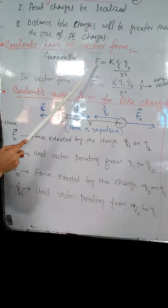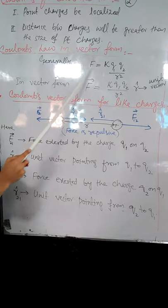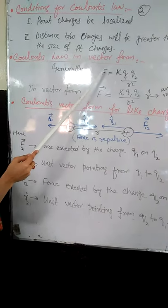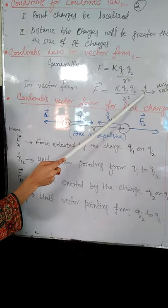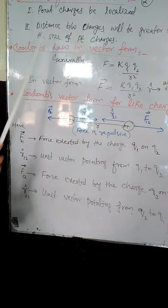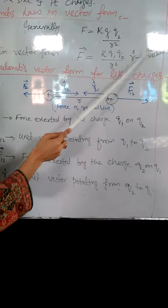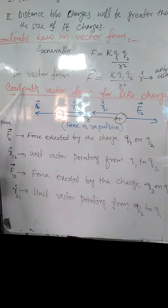Generally Coulomb's law is F equals K Q1 Q2 over R square. Here this electric force is a vector quantity. So to represent the direction of this electric force we use a unit vector. So we can write F vector. We can write Coulomb's law in vector form. F vector is equals to K Q1 Q2 over R square into unit vector.